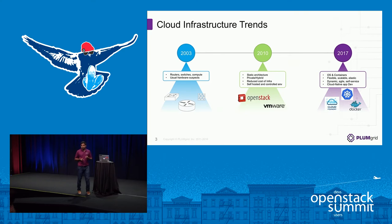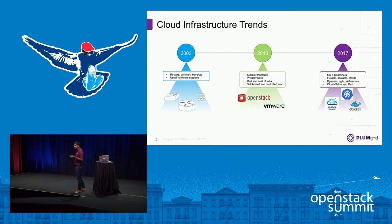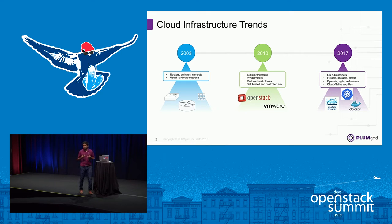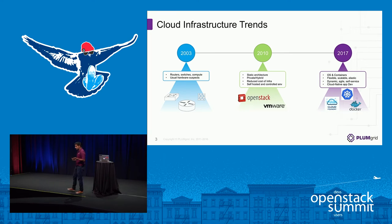One thing I want to start with today is the transformation you are seeing within the cloud, especially from an infrastructure perspective. This transformation in your infrastructure is having a major impact on your networking — how you support and operate your networking services. With each level of transformation, a newer technology is being adopted, and each newer component that becomes part of your infrastructure adds a level of complexity, along with its own learning curve.